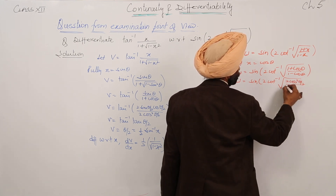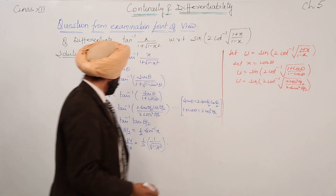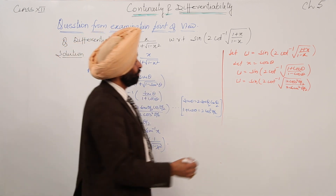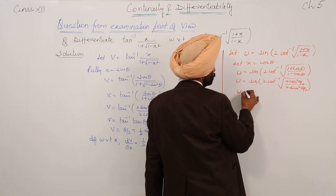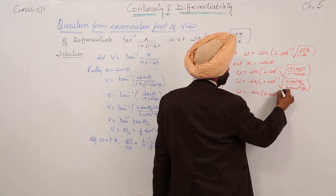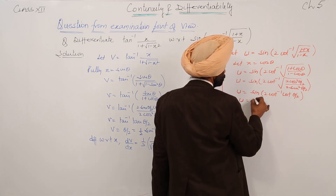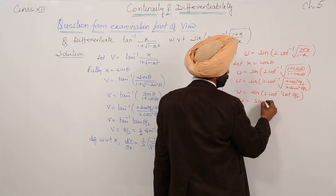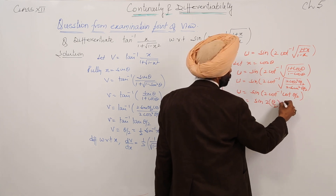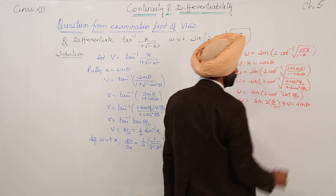This becomes further: u equal to sine of [2 cot inverse of under the root of 2 cos squared(θ/2) upon 2 sine squared(θ/2)]. Here we used the identity 1 plus cos theta. So now this becomes u equal to sine of [2 cot inverse of cot(θ/2)], which gives u equal to sine of 2 times (θ/2).